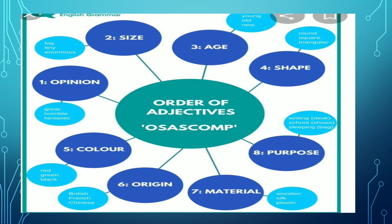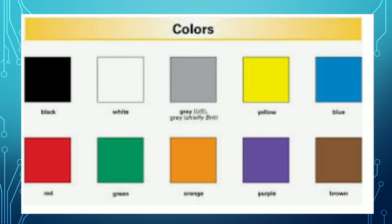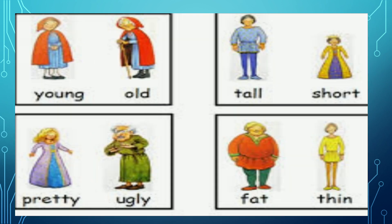Materials — in which material the thing is prepared or made, that is also an adjective. For example, wooden, gold, or plastic. Then the next one is purpose — in which purpose you are doing these things, writing or schooling or whatever may be. Words like tall, short, fat, thin describe the size of a person and are also adjectives.